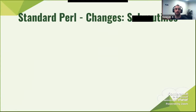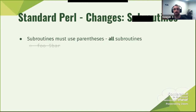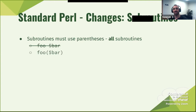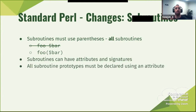These are changes we've done to subroutines — only in the specification, not in the language. All subroutines must use parentheses. All subroutines. No exceptions. So 'foo bar' will not work. 'foo(bar)' will work. Subroutines can have attributed signatures, of course. But all subroutine prototypes must be declared using an attribute.